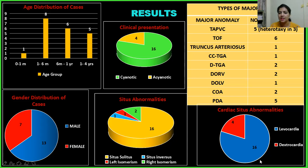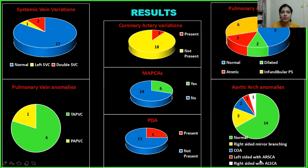2 patients had right isomerism, 1 patient had situs inversus, and 1 had left isomerism; 16 had normal situs solitus. In cardiac situs, 16 patients had levocardia and 4 had dextrocardia. For systemic vein variations, 2 patients had double SVC and 1 had left SVC; 17 were normal. In pulmonary veins, 4 patients had TAPVC and 1 had PAPVC. Pulmonary artery anomalies: 2 had dilated pulmonary arteries and 9 had atresia or infundibular pulmonary stenosis. Aortic arch: 3 had right-sided mirror branching, 2 had coarctation of aorta, and 1 each had left-sided aortic arch with aberrant right subclavian artery and right-sided aortic arch with aberrant left subclavian artery; 14 were normal. 2 had coronary artery variations, 6 patients had MAPCAs, and 5 patients had PDAs.